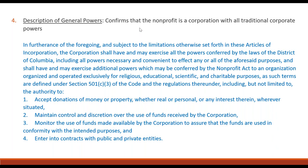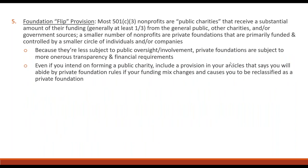Fourth, a description of general powers confirming you want to be a full corporation with all traditional corporate powers — accepting donations, maintaining a bank account, controlling finances, entering into contracts, and so on. Fifth, a provision covering the situation where your 501(c)(3) nonprofit might flip from being a public charity to a private foundation. 501(c)(3) nonprofits come in two flavors: public charities, which receive at least one-third of their funding from the general public, other charities, or government sources — and private foundations.